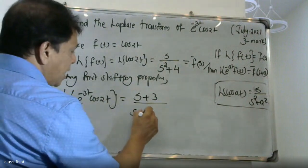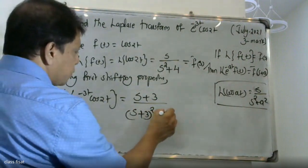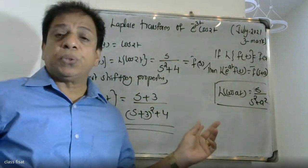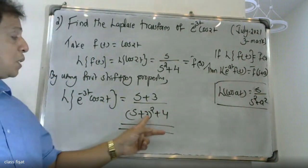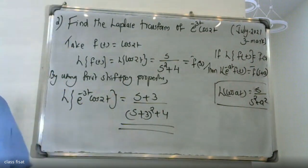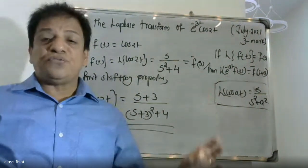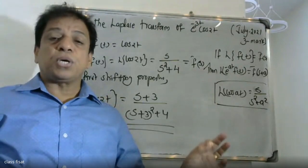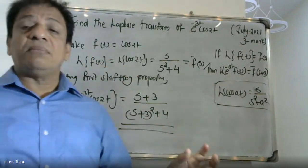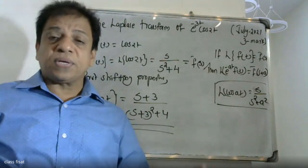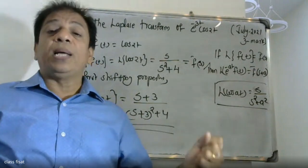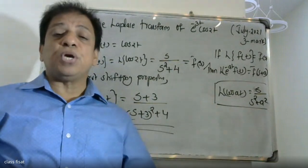So s is replaced by s plus 3, giving us s plus 3 divided by s plus 3 squared plus 4. We took f of t equals cos 2t, and its Laplace transform gave us s over s squared plus 4. Then applying the first shifting property for e raised to minus 3t cos 2t.